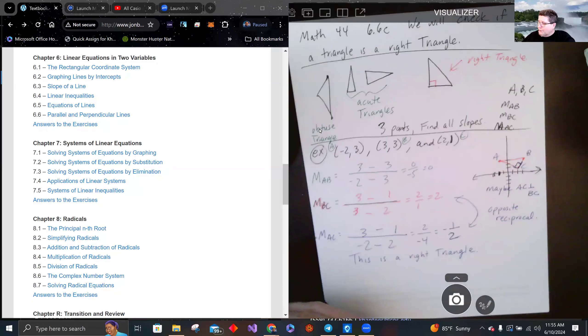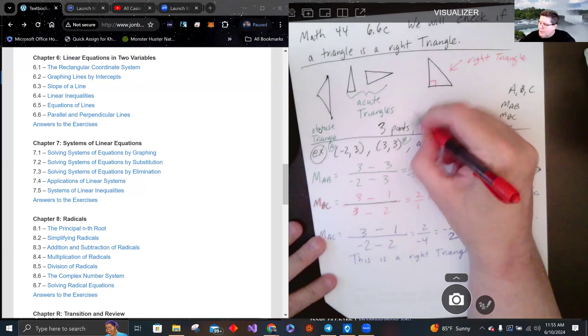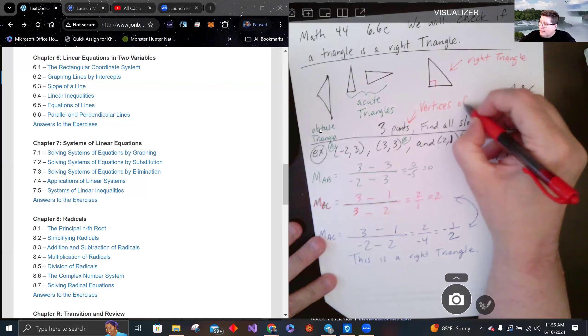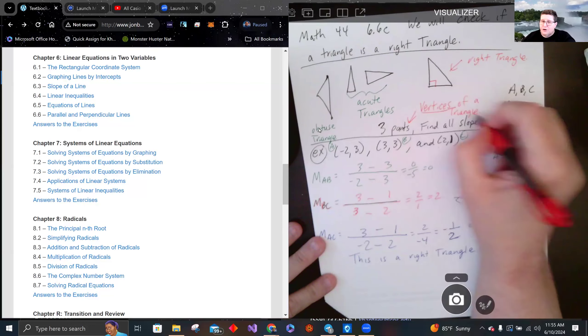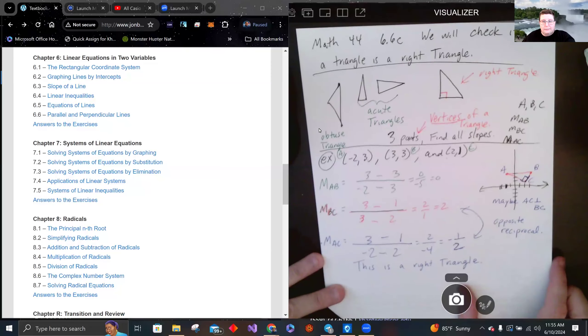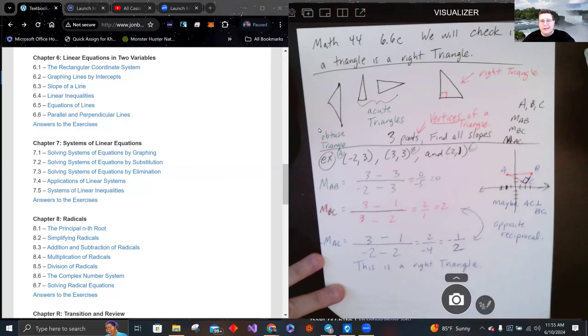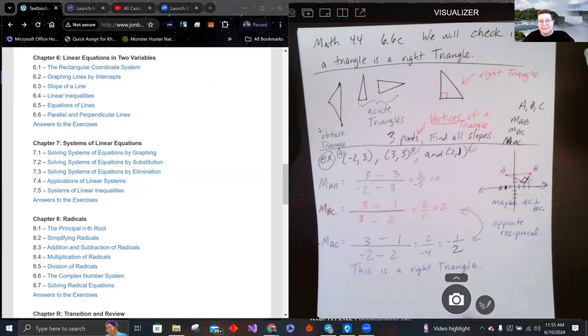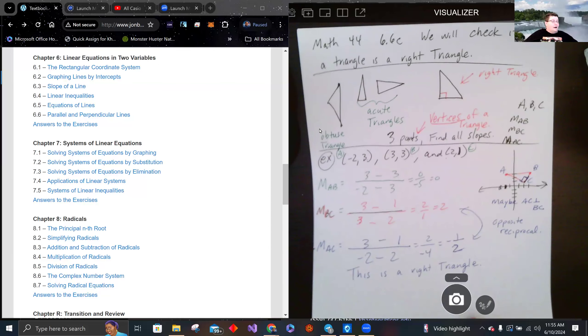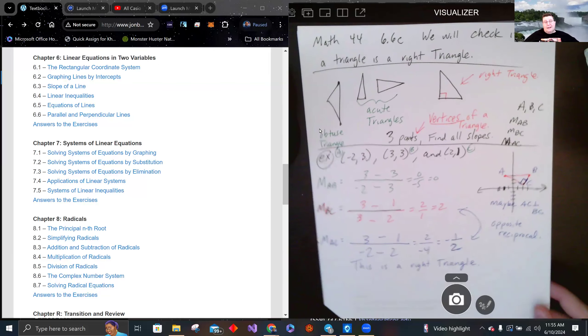Some fun lingo for you: these three points, the points on a triangle, are called the vertices of a triangle. There's your Jeopardy question. So when you're watching it with grandma, you'll get that in the math category and you'll impress her. She'll be like, damn, I didn't know those were vertices. Actually, I bet your grandma doesn't say damn a lot. A lot of grandmas don't.